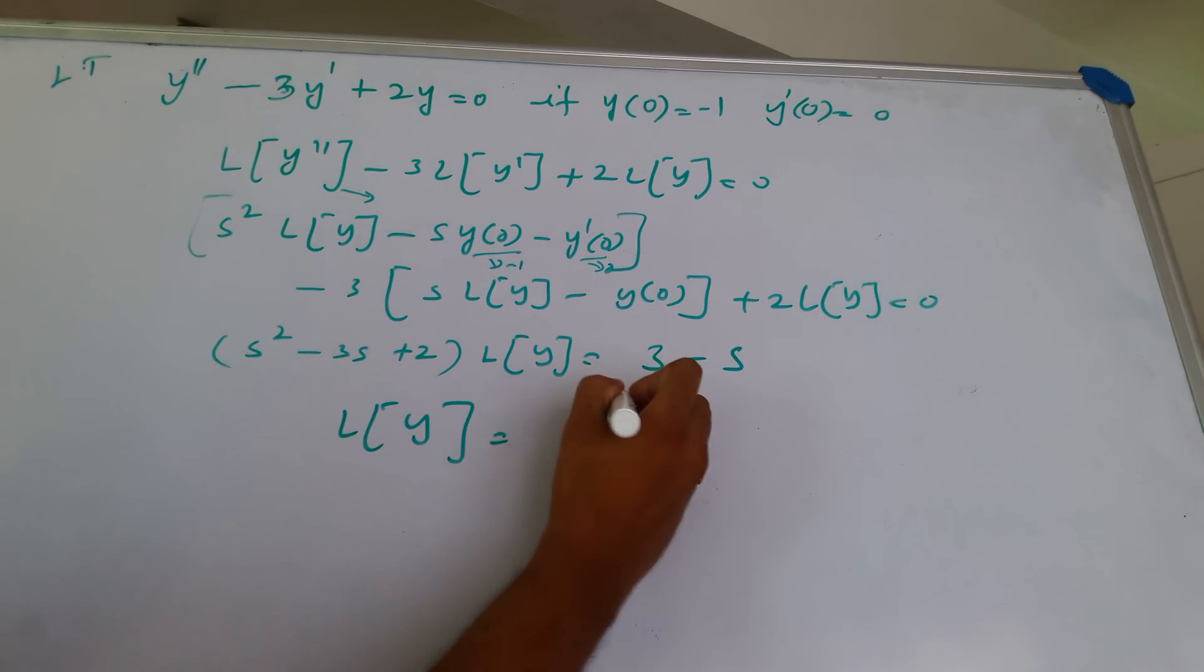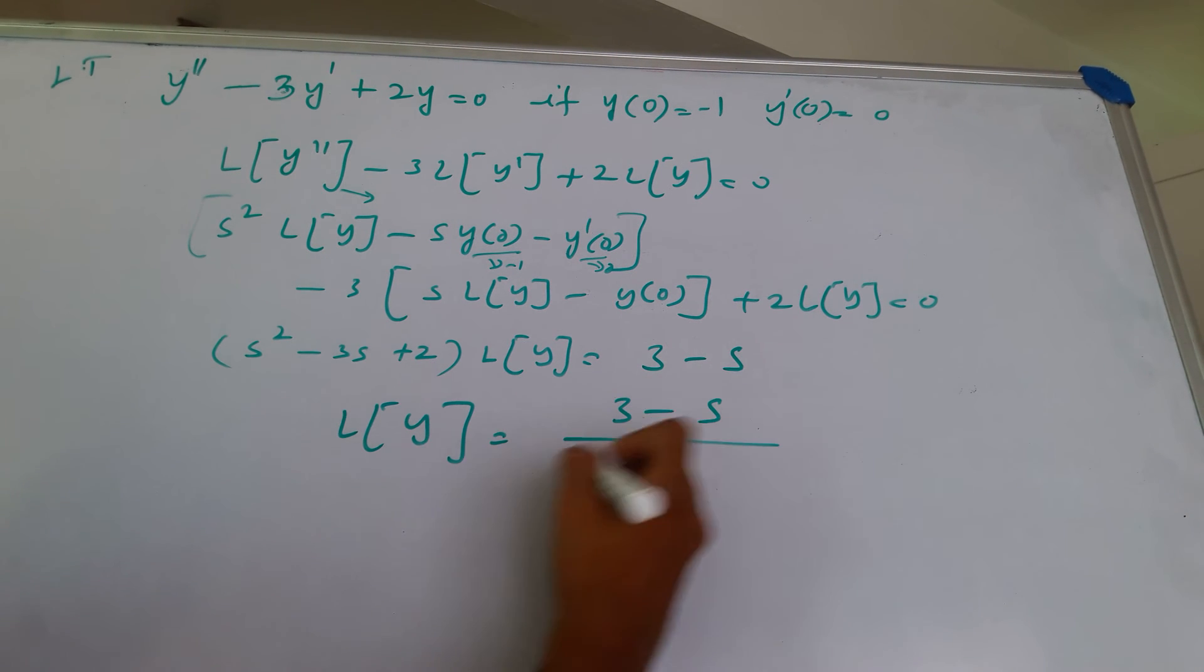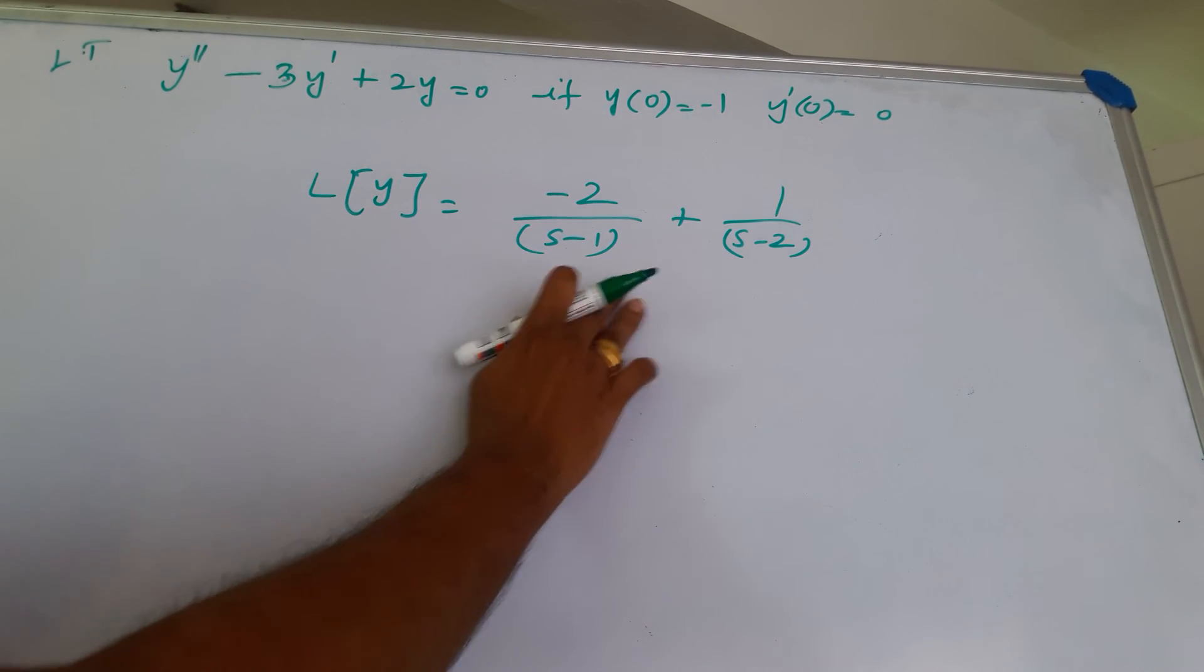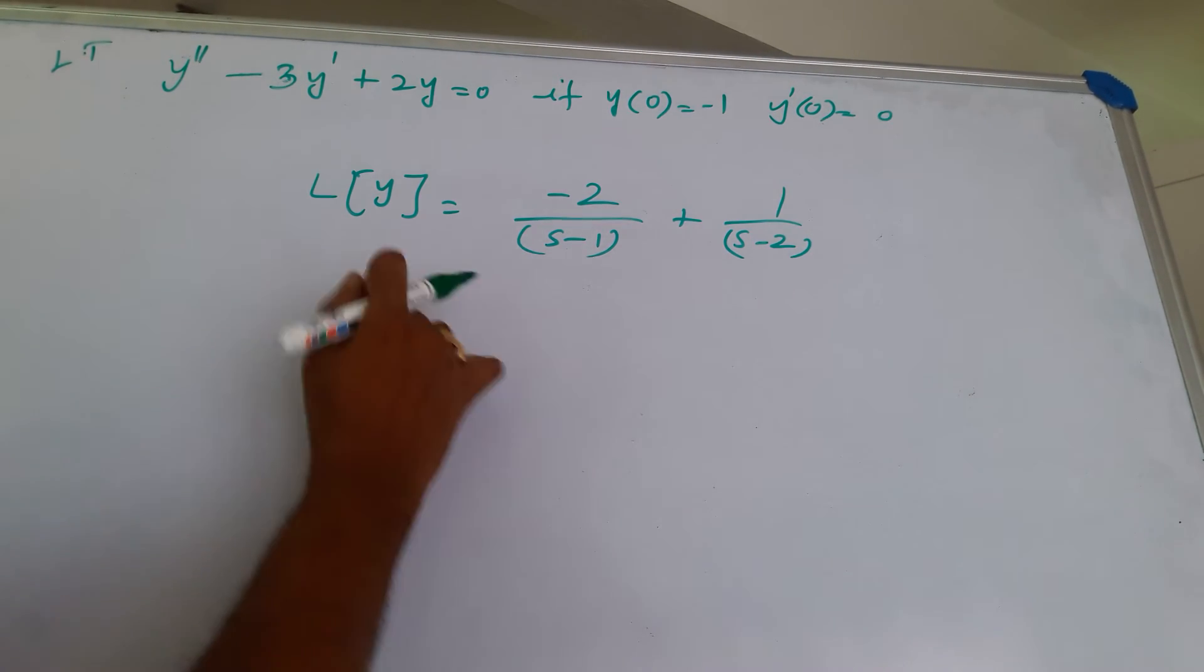L of y is equal to 3 minus s divided by s minus 1 times s minus 2. After finding the partial fractions for that, I get this.